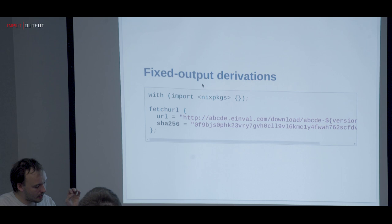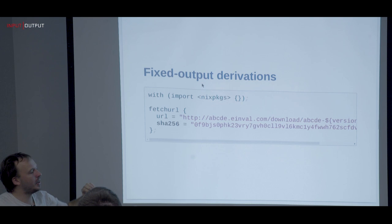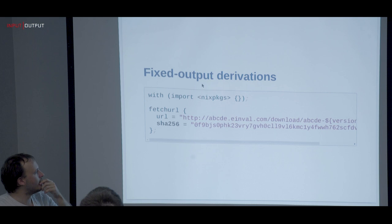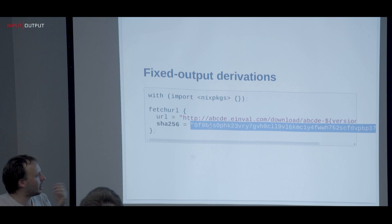There are content-addressed derivations, but there is also a fixed-output derivation, which means instead of calculating the hash, we give the hash to the derivation. This allows network access, because anything you get can be hashed at the end. This is how you do networking in Nix. We have determinism through the hash we provide, and `fetchurl` uses curl in the background, downloads it, and asserts the output has this hash.